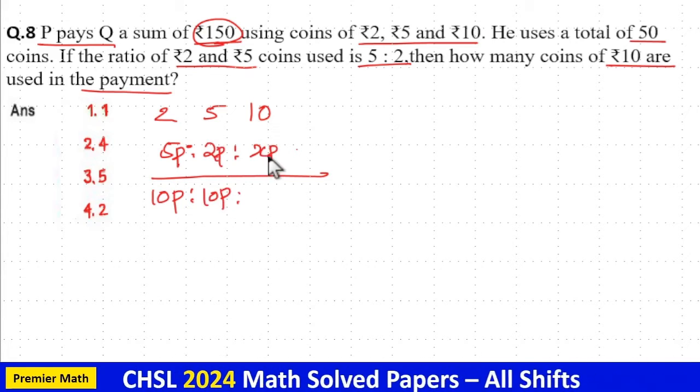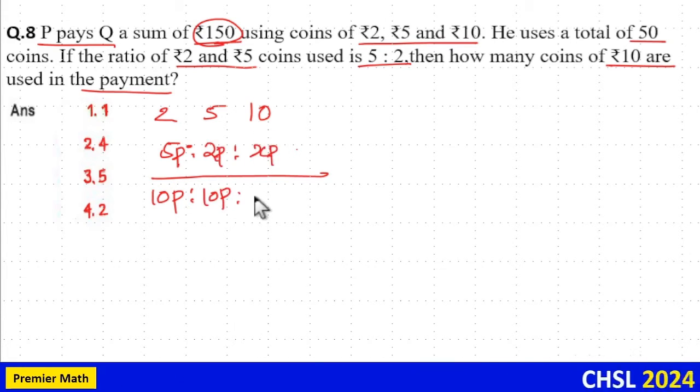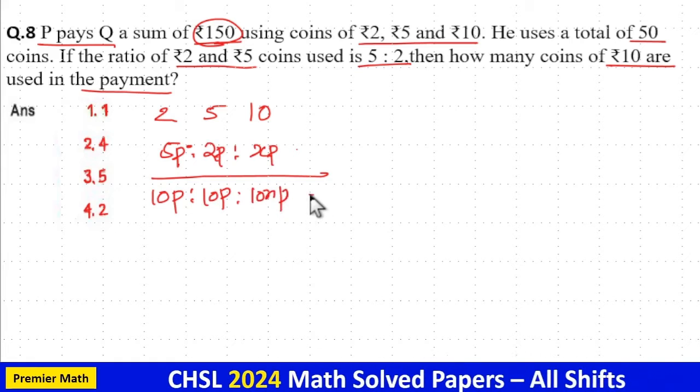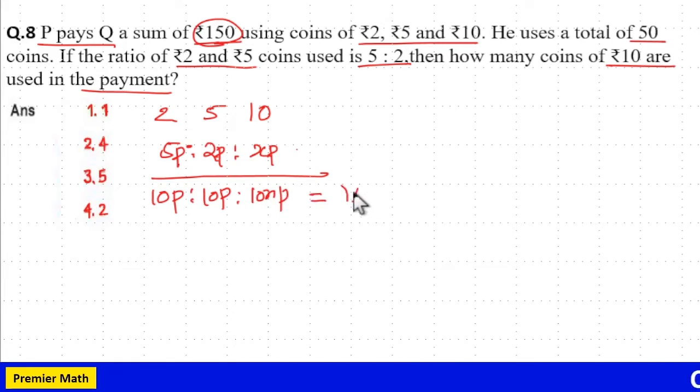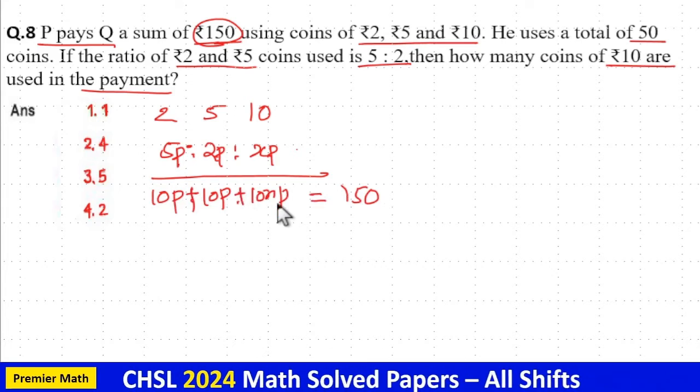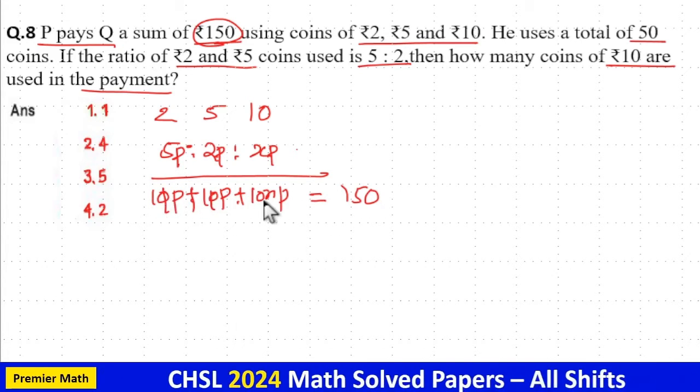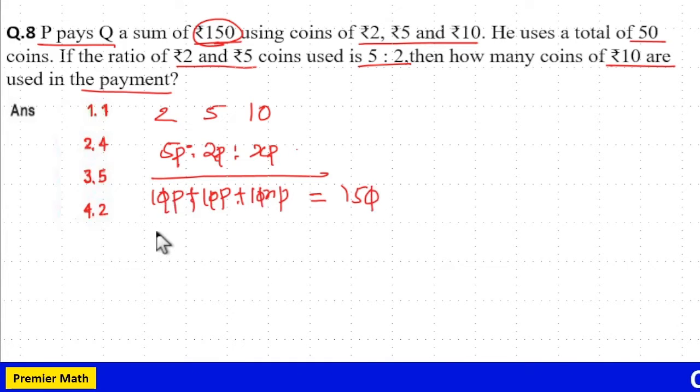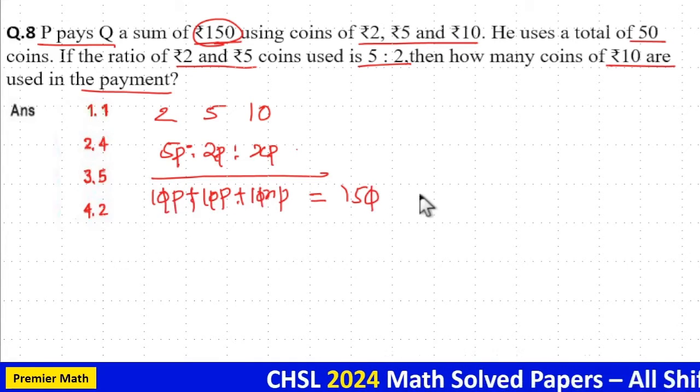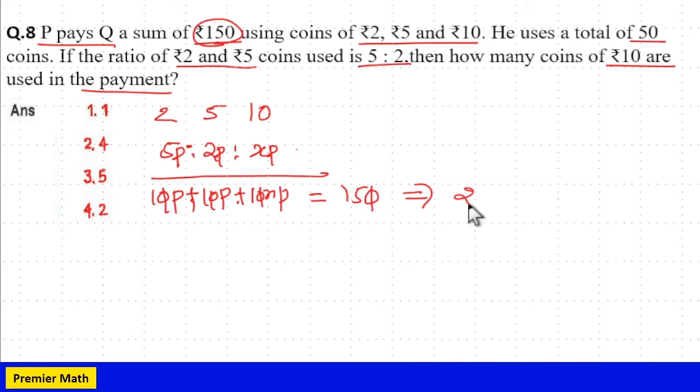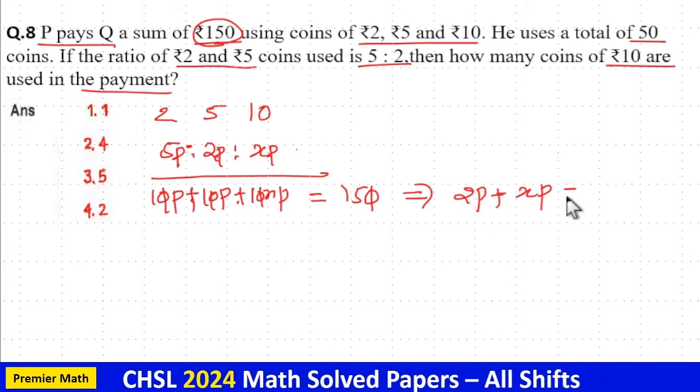Now, 10 rupee coins are X part in number. So, 10 into X, 10X part. Now, total value is equal to 150 rupees. That is, 10 part plus 10 part plus 10X part is equal to 150. If I cancel this 0 from all these terms, this will become 2 part plus 2 part plus X part is equal to 15.